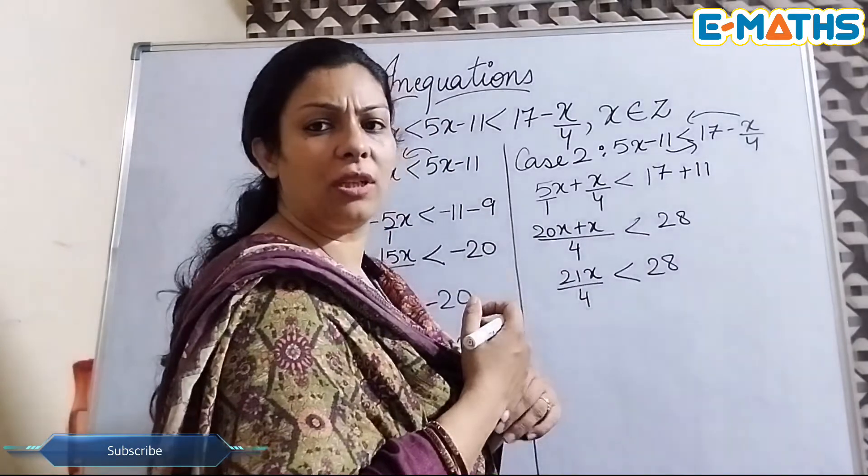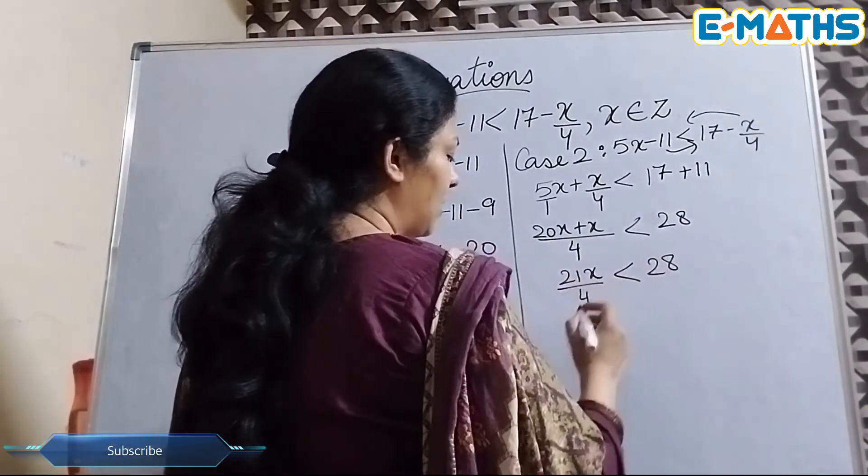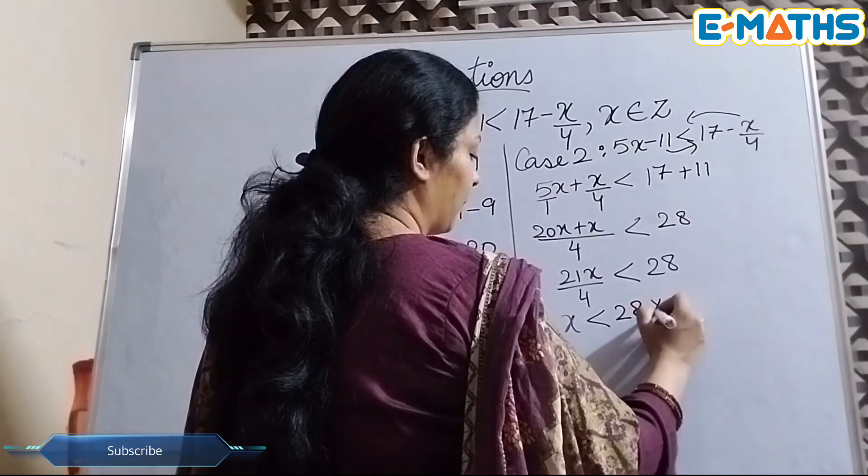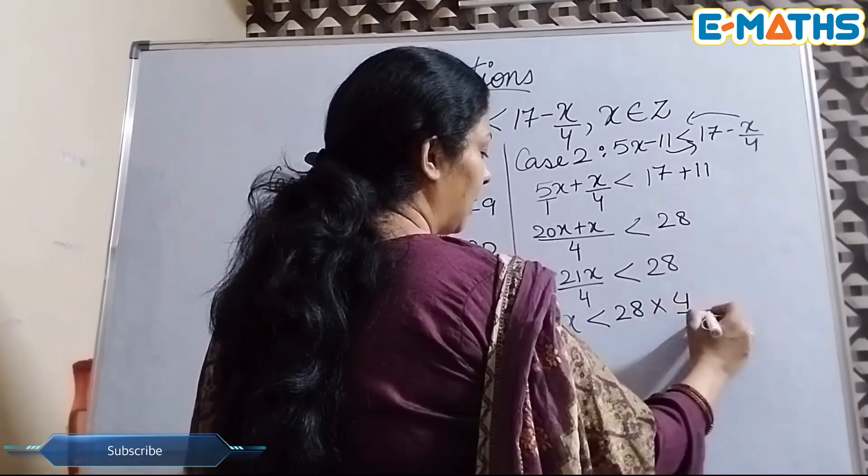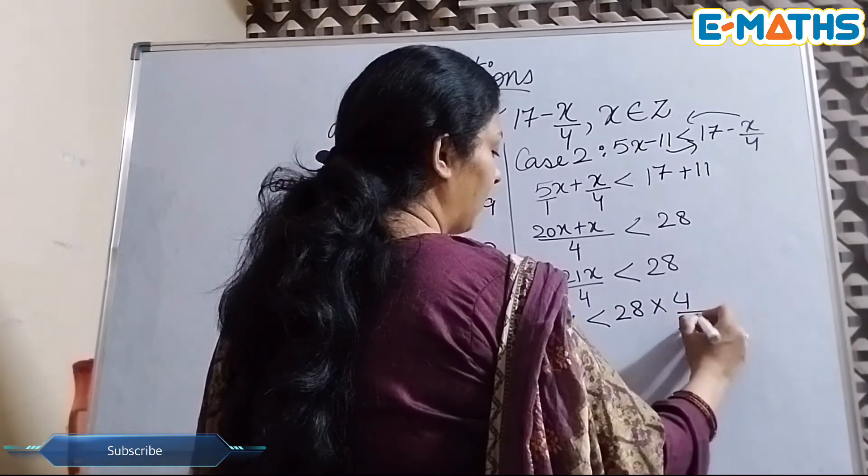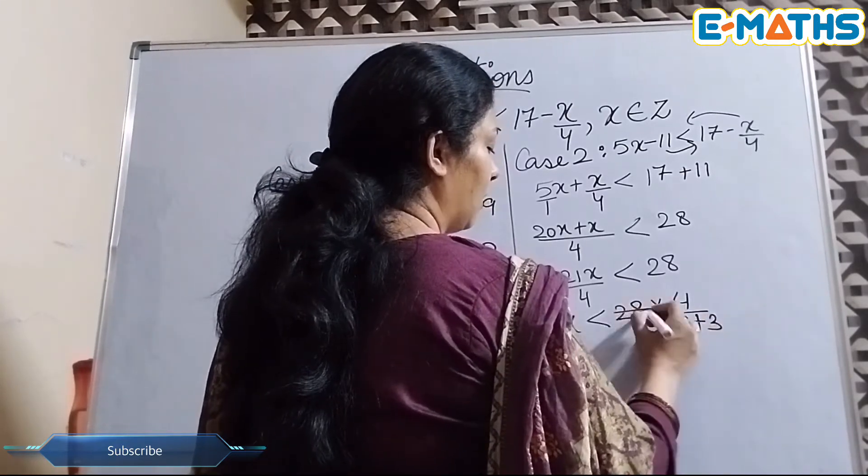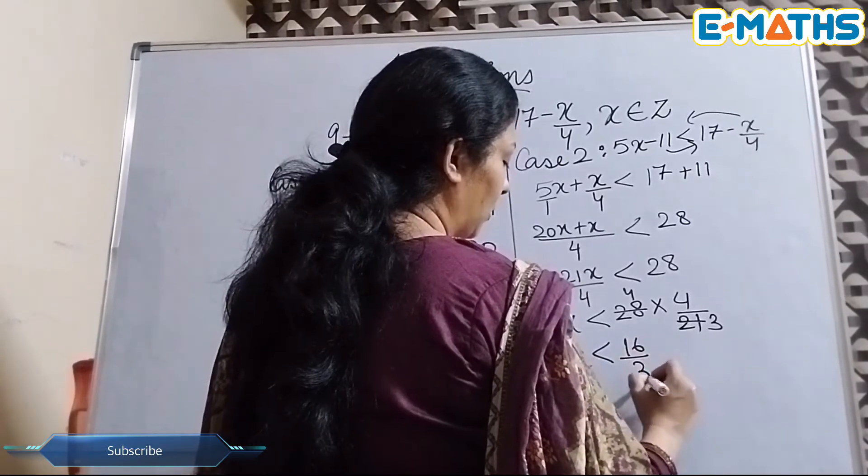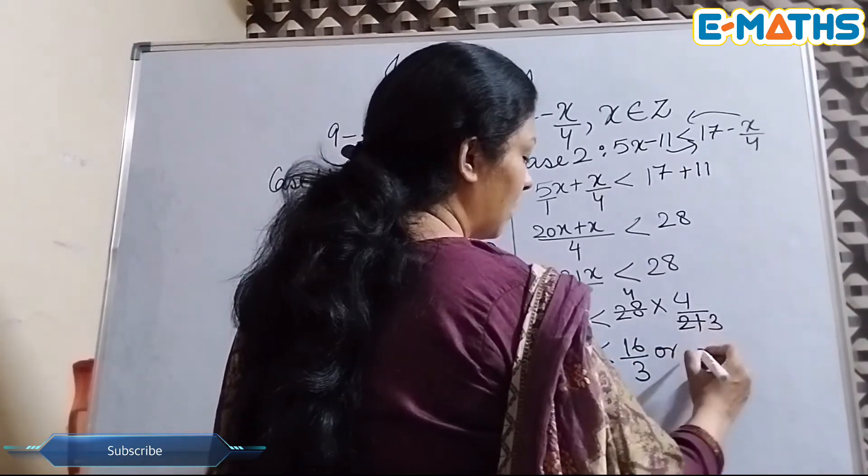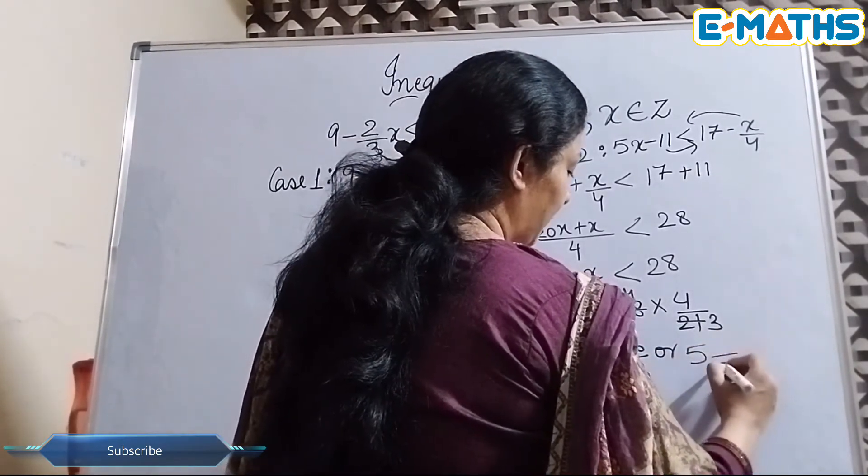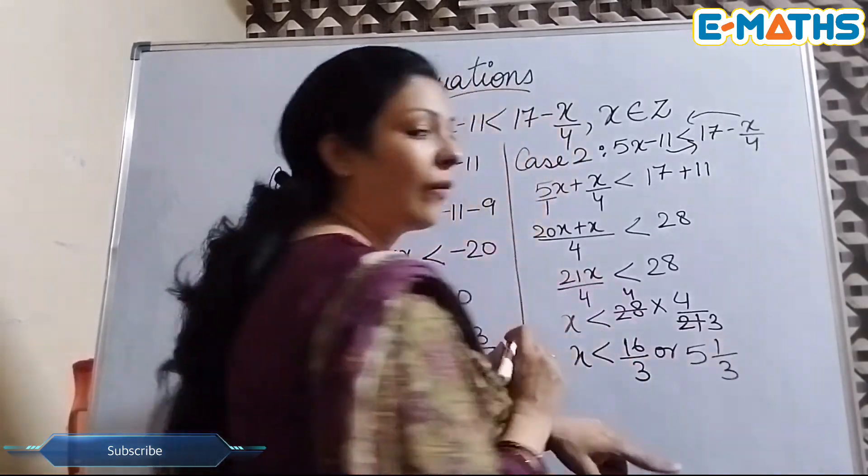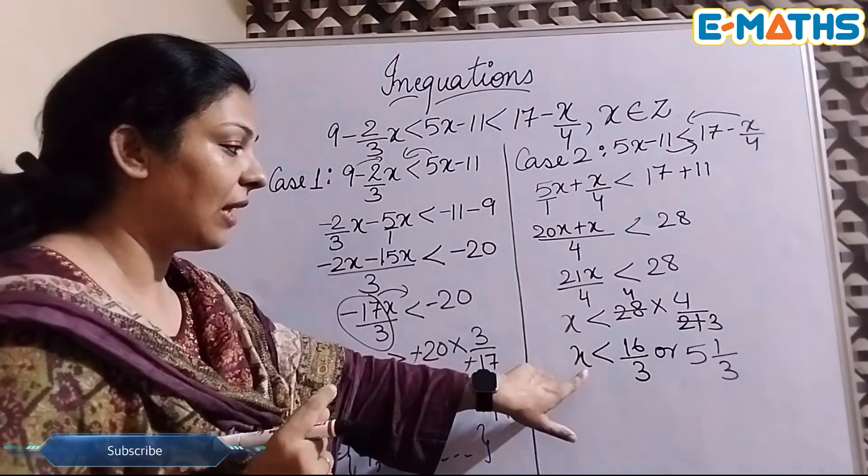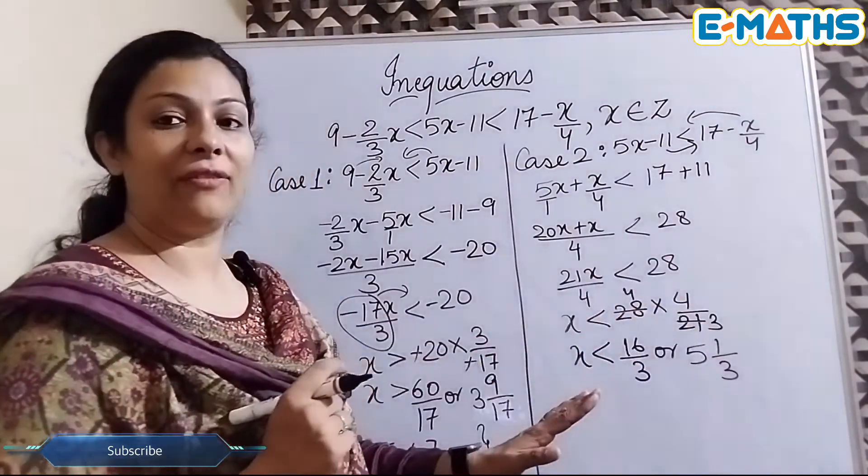Here if we see, both the terms are positive on either side. So now we'll just simply transpose without changing the sign of inequality. But this will be upside down. 4 will go up, 21 will come down. 7 times 3, 7 times 4. So we have x's value smaller than 16/3, or we can also write it as 3 times 5 is 15, so 5 1/3. That means now here x value is less than 5 1/3.